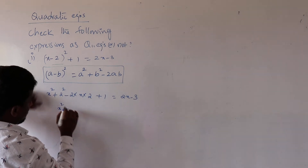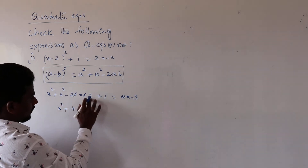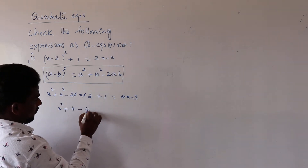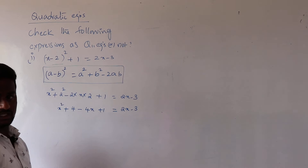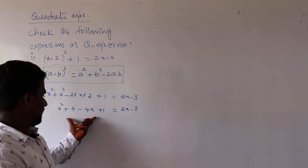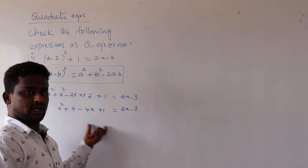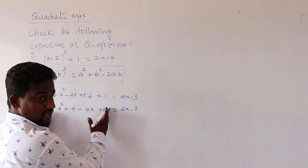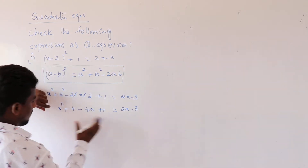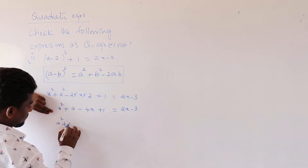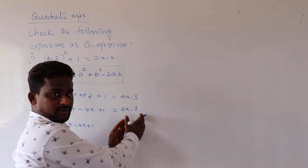So x square plus 4 minus 4x plus 1 equal to 2x minus 3. Now we have an LHS part and RHS part. We transpose the right side to the left side: x square plus 4 minus 4x plus 1, and transposing 2x gives minus 2x, and transposing minus 3 gives plus 3, equal to 0.